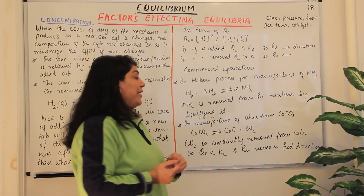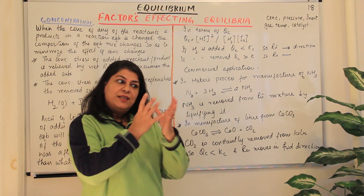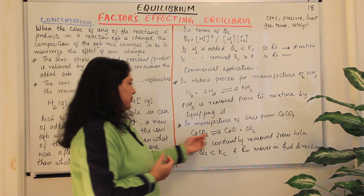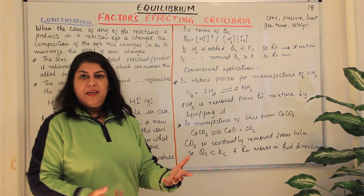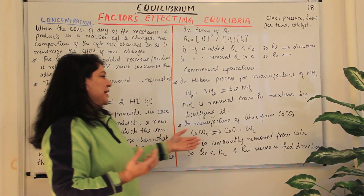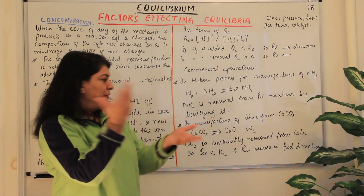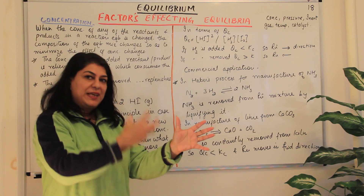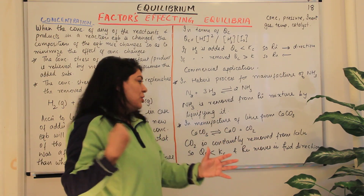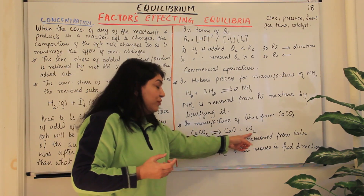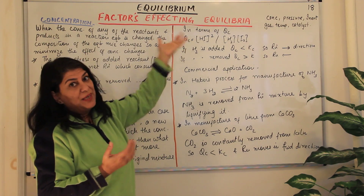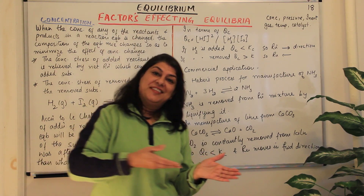Another application is in the manufacture of lime from calcium carbonate. Calcium carbonate decomposes to give calcium oxide — lime, used in construction — and carbon dioxide. Calcium carbonate and calcium oxide are solids, and carbon dioxide is a gas. The idea is to remove one of the products to make the reaction proceed in the forward direction. The carbon dioxide produced simply moves away and is constantly removed from the kiln — an oven that maintains very high temperatures. With the removal of CO₂, the concentration of the products decreases, QC becomes less than KC, and the reaction proceeds in the forward direction.